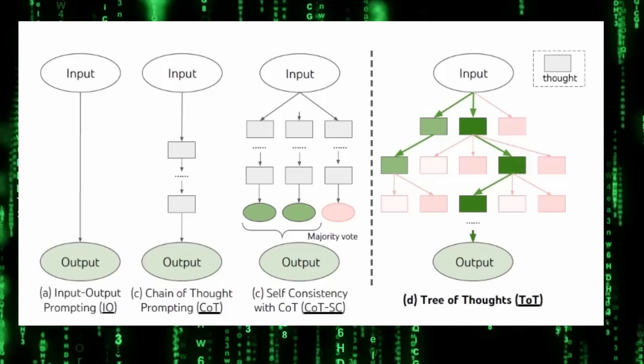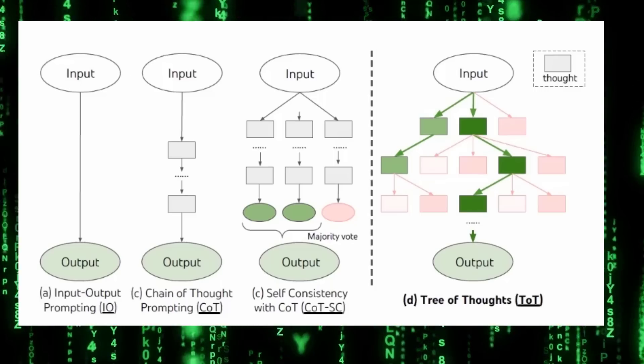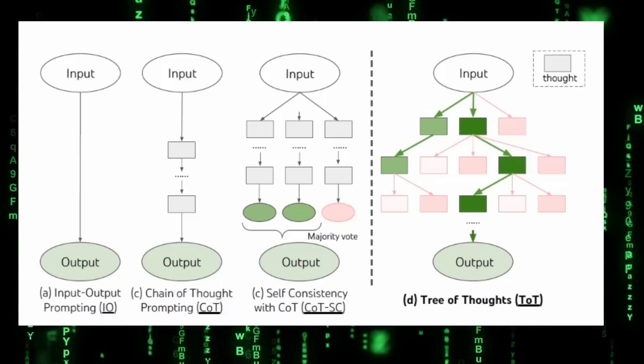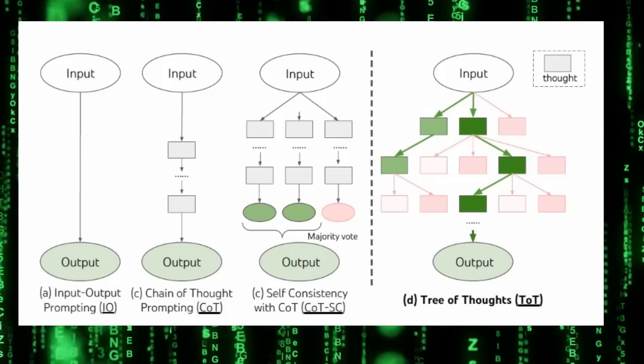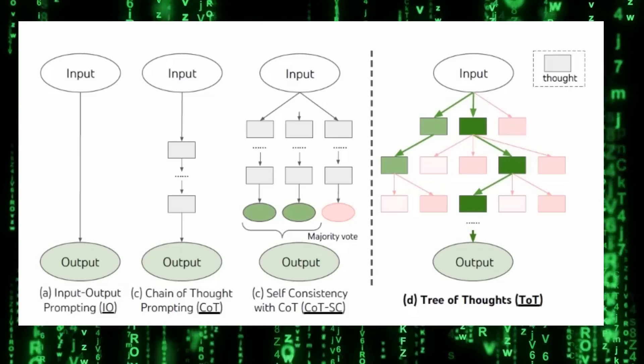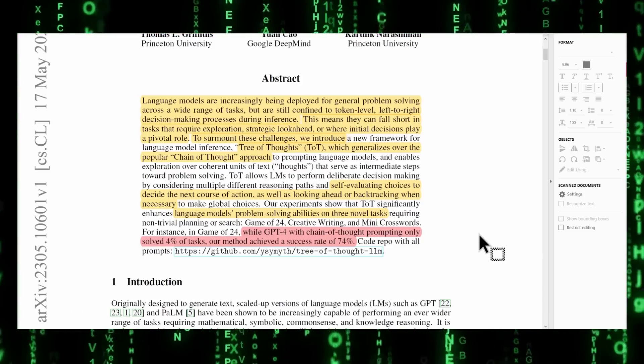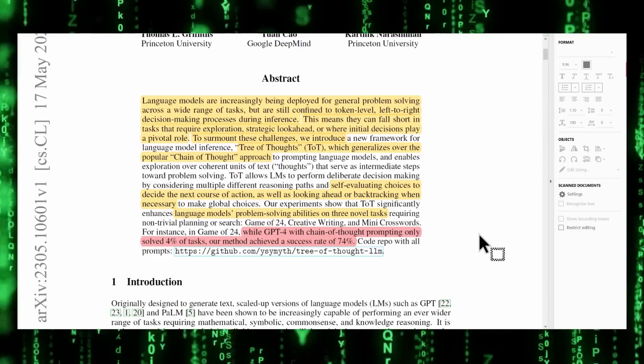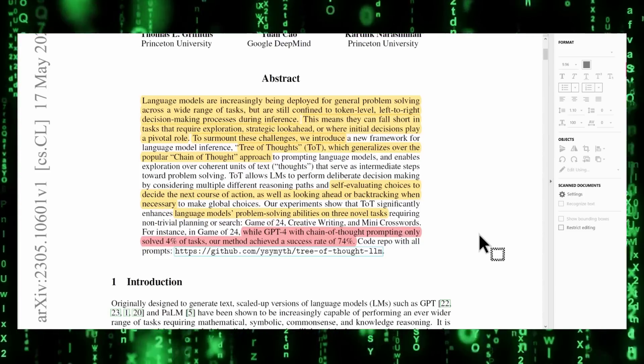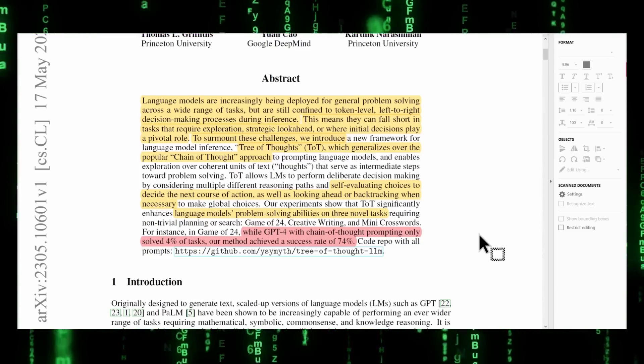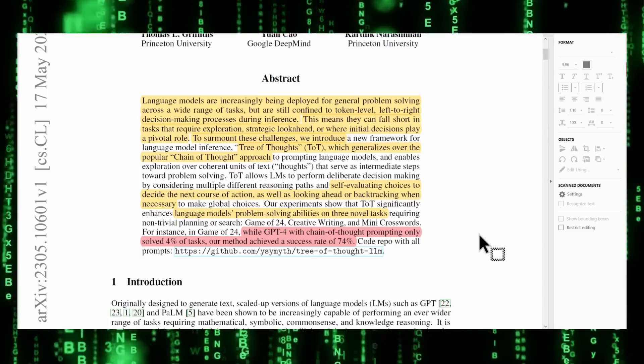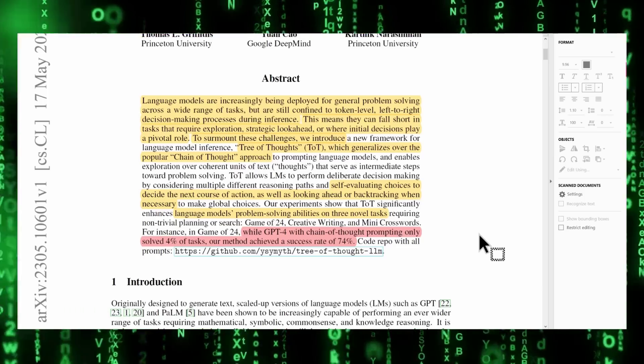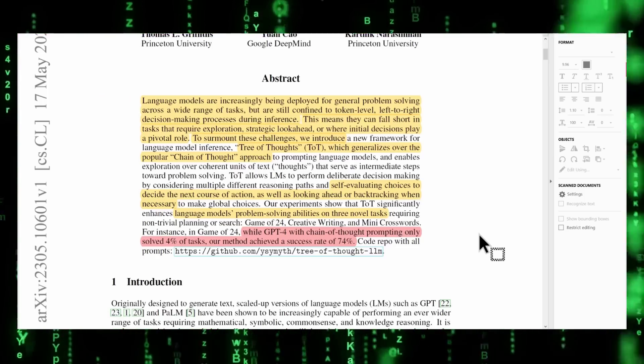But what is even better than that? Tree of Thoughts has the potential to be many times more powerful than the previous prompting methods. This approach works really well for LMs for more complex reasoning tasks. Here's the abstract from the paper. Language models are increasingly being deployed for general problem solving across a wide range of tasks, but are still confined to token level left-to-right decision-making processes during inference. This means they can fall short in tasks that require exploration, strategic look-ahead, or where initial decisions play a pivotal role.